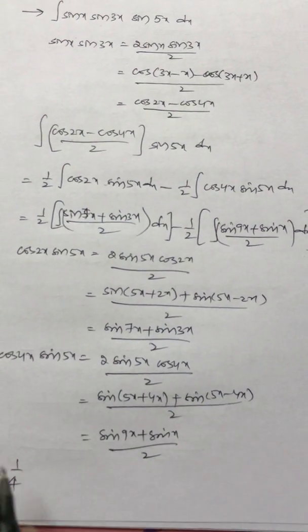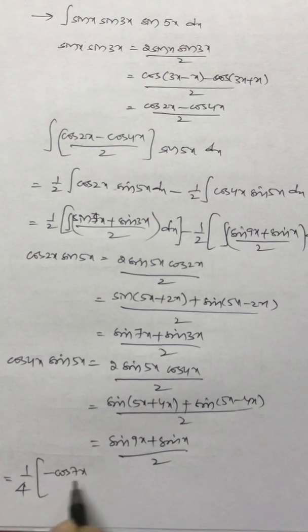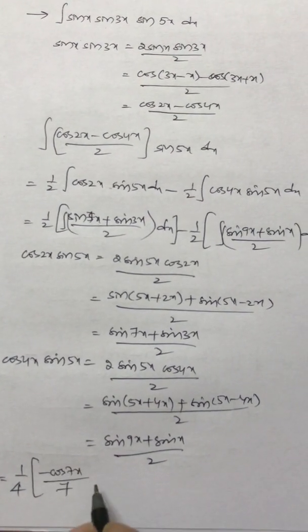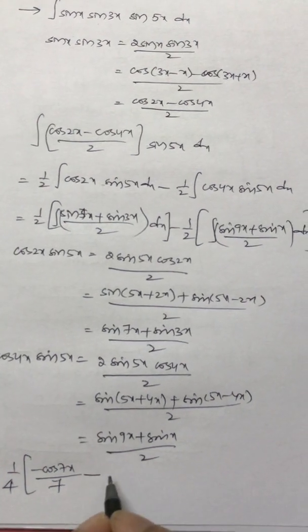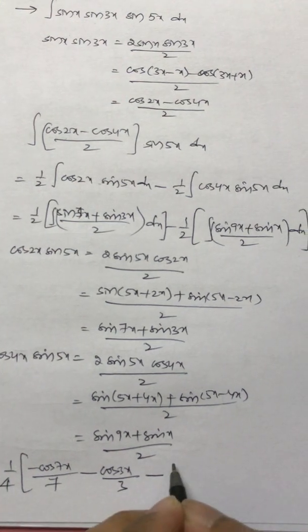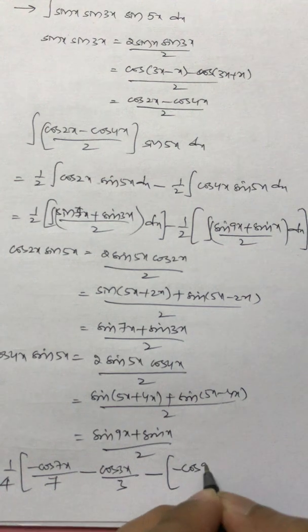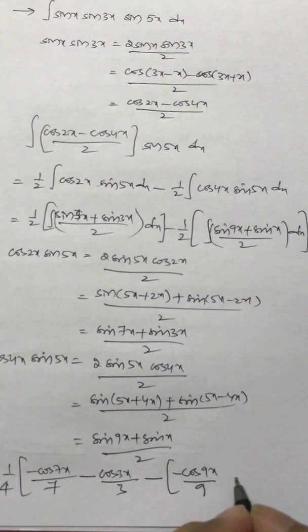One by four into: integral of sin 7x is minus cos 7x by 7, integral of sin 3x is minus cos 3x by 3, minus integral of sin 9x which is minus cos 9x by 9, minus integral of sin x which is minus cos x, plus c.